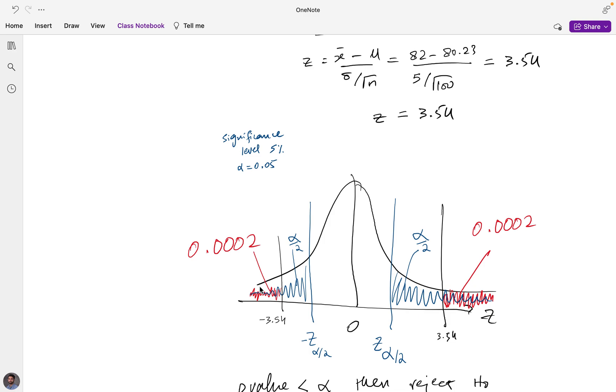But a fundamental thing that has changed now is the area corresponding to the alpha value, the significance level. Notice it gets divided into two parts on either side of the tail, either side of this, on both sides of the normal distribution. So we're looking at both the tails now. See, the alpha value gets divided on both the tails.